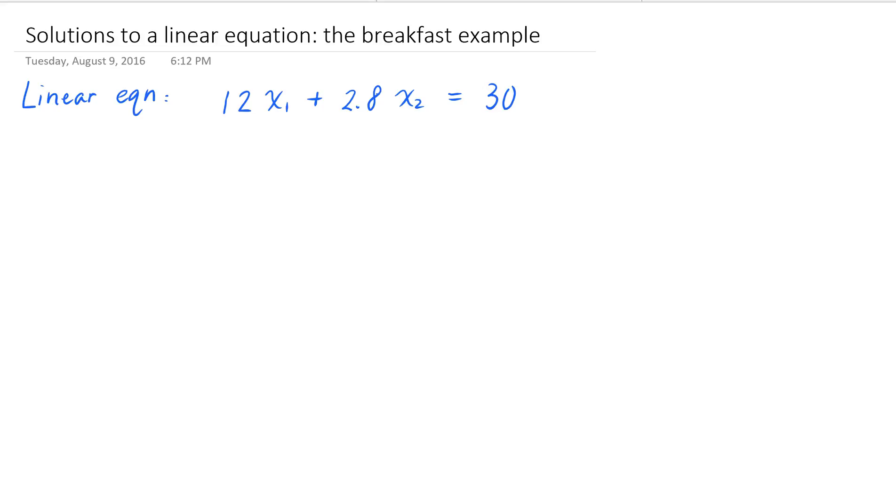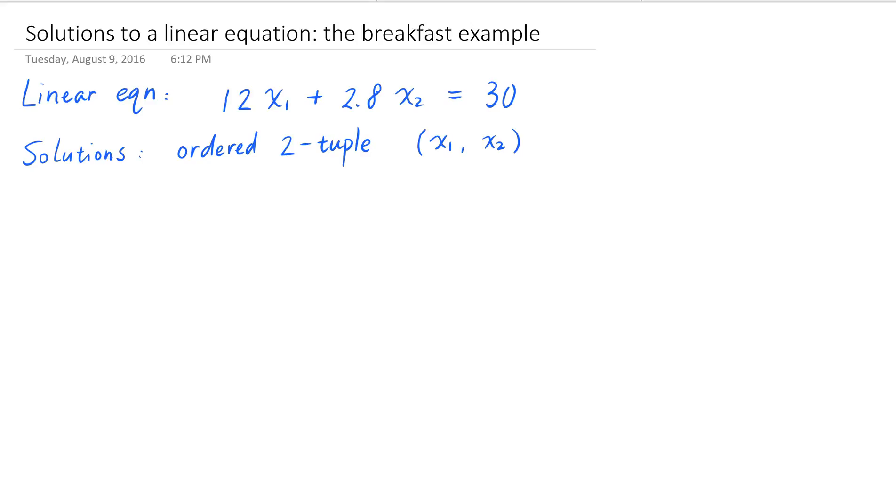In this video, we're going to look at the solutions to this equation. Because this is an equation about two unknown variables, the solutions are so-called ordered 2-tuples. They are pairs of numbers x sub 1, x sub 2. These ordered 2-tuples contain information of how many cups of yogurt and how many ounces of granola. These two numbers have to pair together to be a solution of the equation.